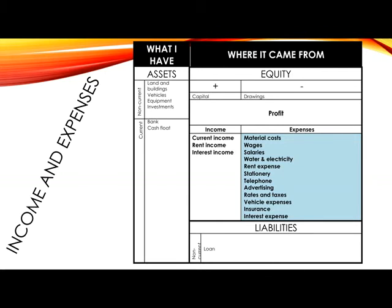Vehicle expenses would include any costs of running a vehicle: services, petrol, tyres, etc. Insurance might be incurred in order to reduce the risk of accident, theft, etc. Insurance premiums might be paid so that if there is an accident, the money can be paid out to the business. The last expense that you might incur is interest — if money is borrowed, for example for a loan, interest will need to be paid. Of course, there may also be many other expenses incurred by the business; you will just need to use your common sense to understand that there are expenses, and from there see how they fit in.